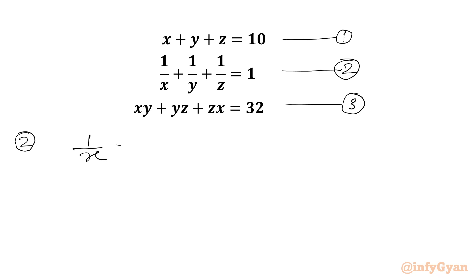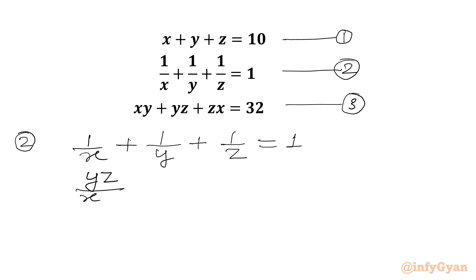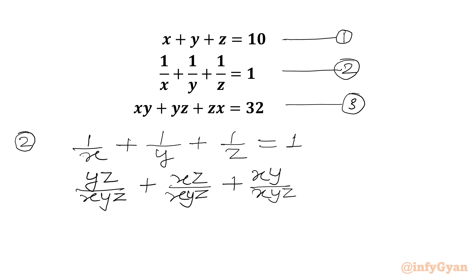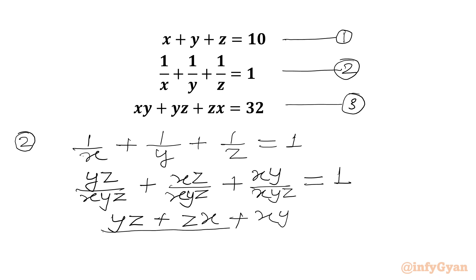So I can write 1 over x plus 1 over y plus 1 over z equal to 1. Here I will multiply with yz in the numerator and denominator. So the denominator will become xyz, plus 1 over y will be xz over xyz, plus 1 over z will be xy over xyz. Now our denominator is the same, so we can simply add the numerator terms: yz plus zx plus xy in the numerator.